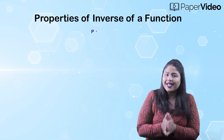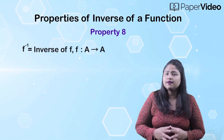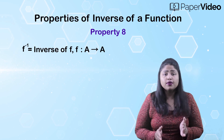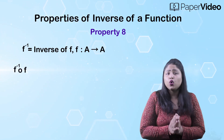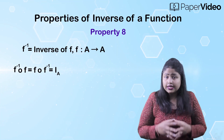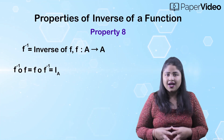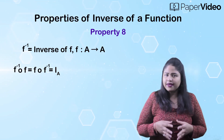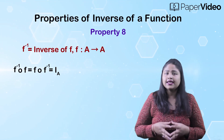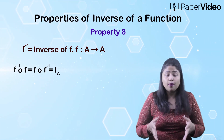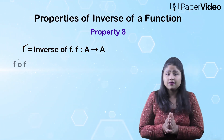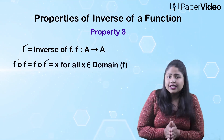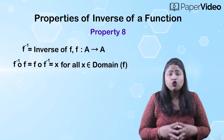According to the eighth property, if f inverse is an inverse of function f defined on two equal sets, then the composition function f inverse of f equals f of f inverse equals I_A, where I_A is the identity function on the set A. This means that f inverse of f equals f of f inverse equals x for all x belonging to the domain of f.